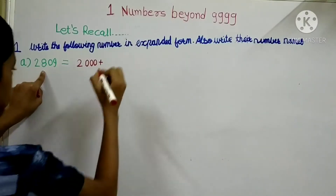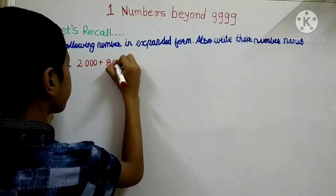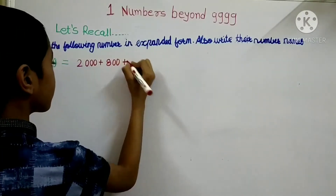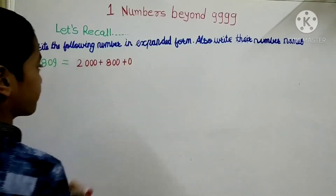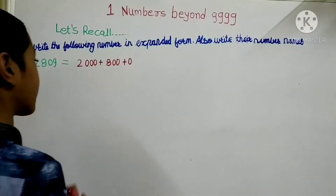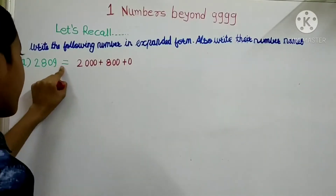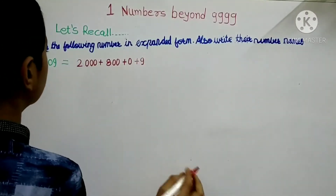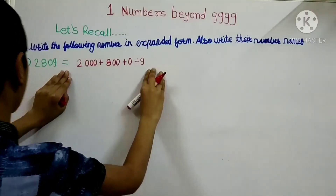Then the number is 8, so we will write 8 as it is. There are 2 numbers after the 8, so we will write 2 zeros. After the 8 there is a 0, so we will make an additional plus sign and put a 0 — this is optional, you can do it or not. After the 0, there is 9, and after 9 there is no number, so we will write 9 as it is. Remember to put a plus sign between each number. This is our expanded form.